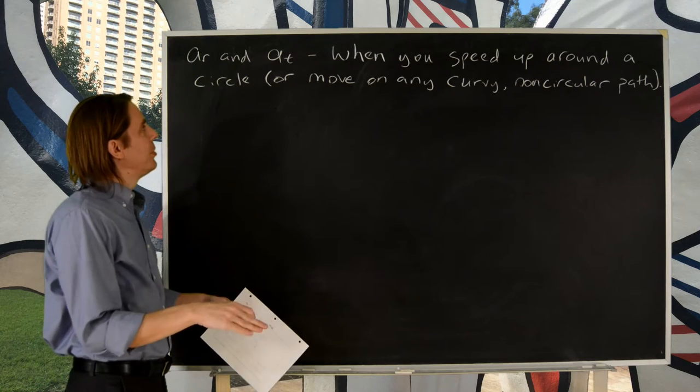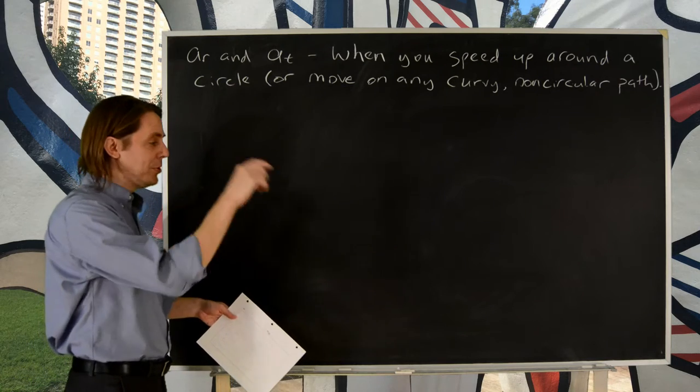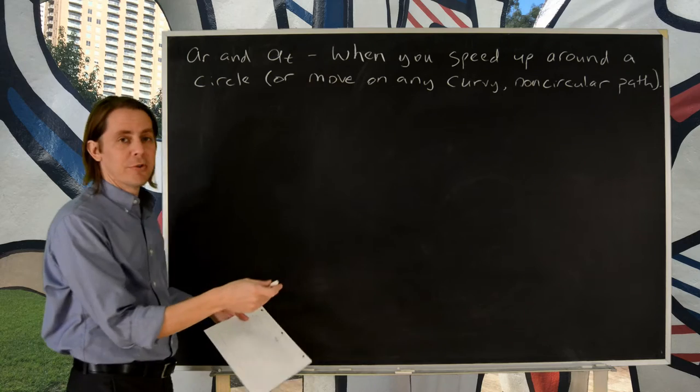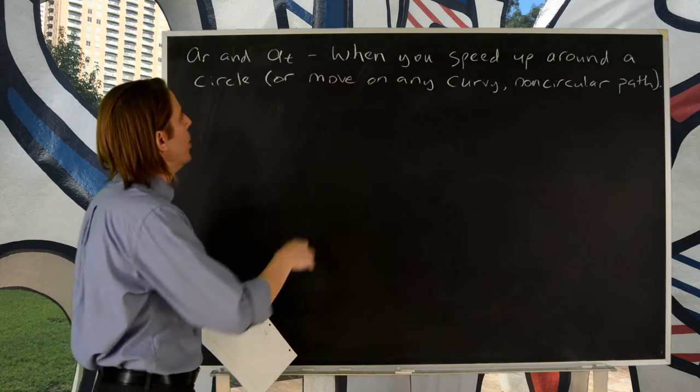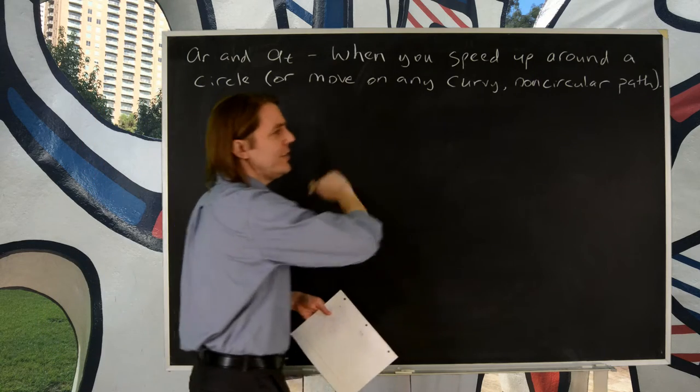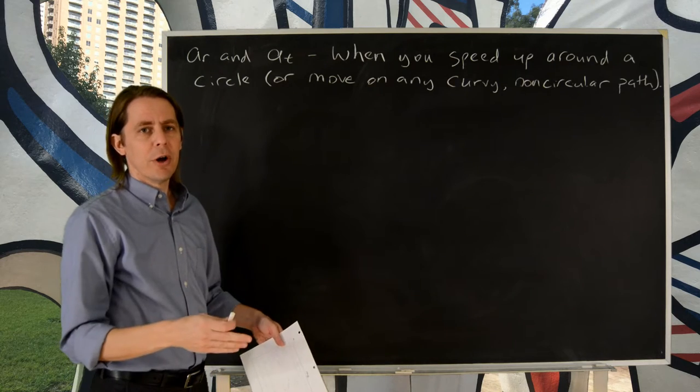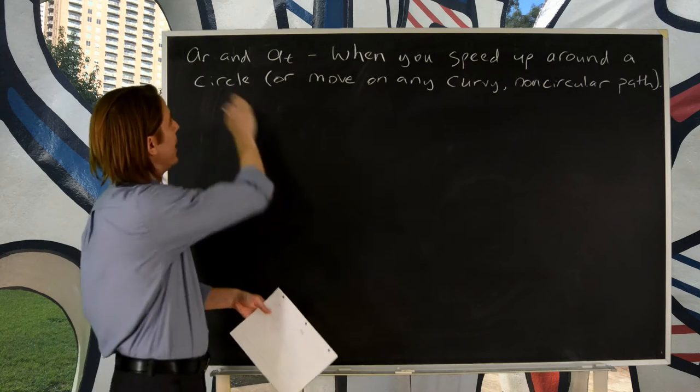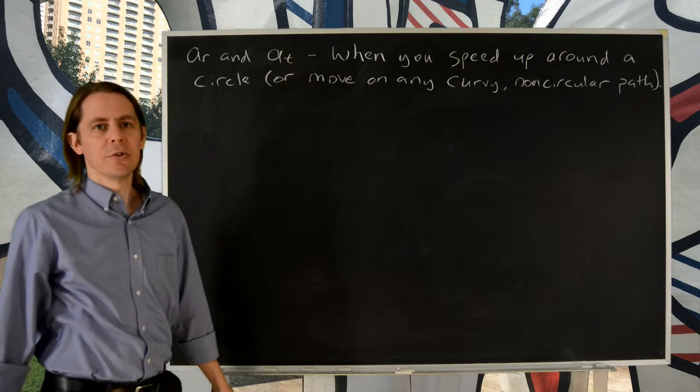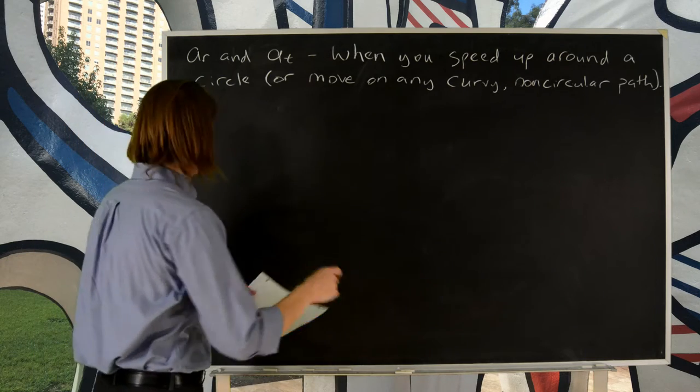Basically, when you speed up around a circle. So when you normally just go around a circle, all we have is centripetal acceleration. What if we speed up? Or really, therefore, any time you're moving in any kind of a curved path, whether it's a circle or not, you might have radial and tangential acceleration. So let's look at it for a few cases.